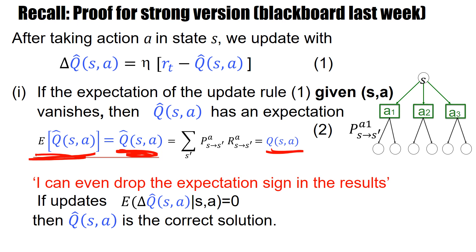In other words, if the updates expectation, the expected update of this rule delta Q that we had in equation 1 is 0, then Q hat is the correct solution. Well, given what we have seen in the previous video, this should be clear now.